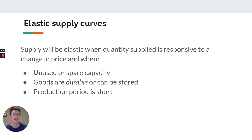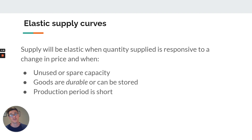Now, elastic supply curves. So we have a PES above one — like three in the example we just looked at — meaning that suppliers can respond to a change in price. The factors are exactly the same, we just reverse them. So it means we do have spare capacity — there are plenty of resources available to produce more of this particular good or service. If goods are durable, then suppliers can produce them previously, store them away, and wait for the price to go up.